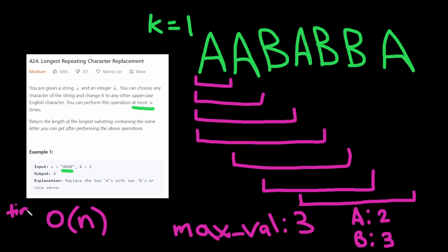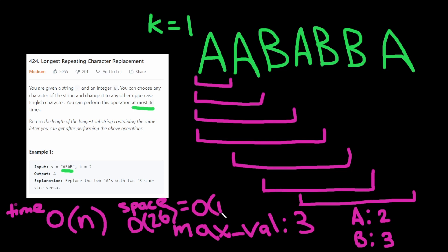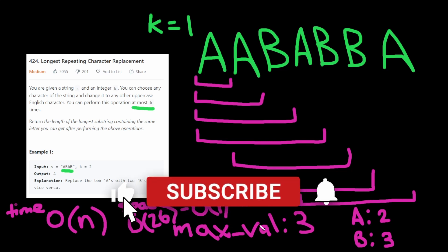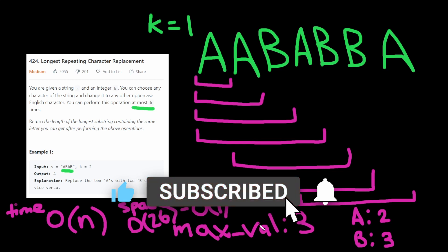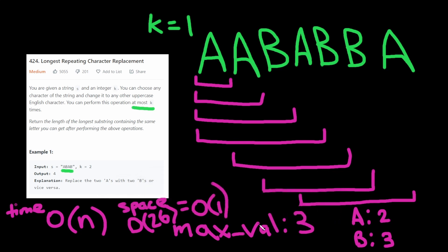The time complexity is O(N). The space complexity is O(26) because this problem specifies that the characters are only uppercase English characters, meaning there are at most 26, and we can reduce that down to O(1). Before we get to the code, if you found this helpful so far, please give a like and subscribe because it really helps the YouTube algorithm. And with that said, let's get to the code.